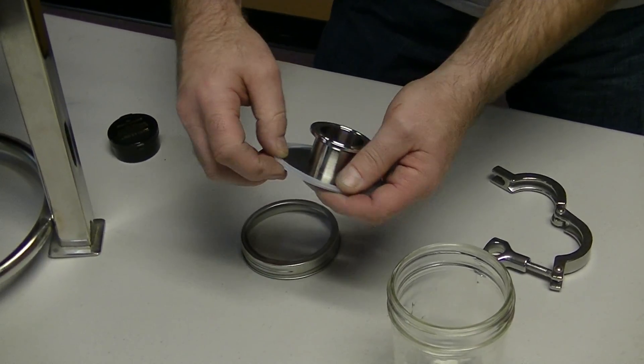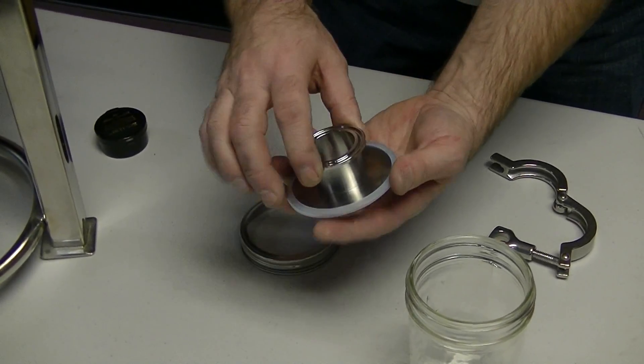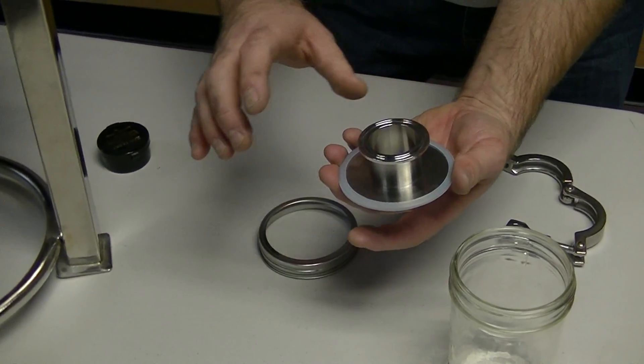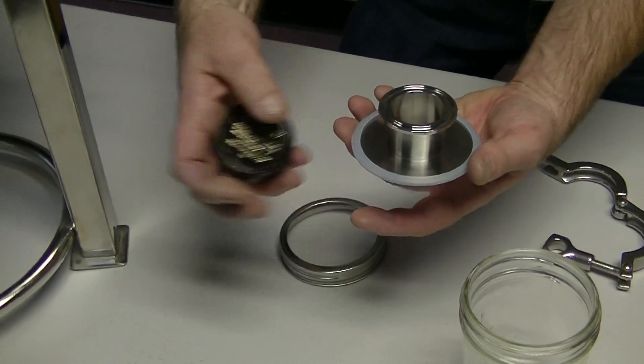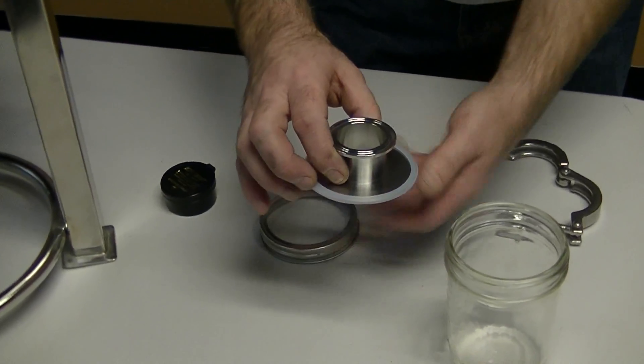What I'm urging people to do is, when they get this on and they're getting ready to put this together, use a little keg lube to go around here. It's going to help get this sealed quite a bit.